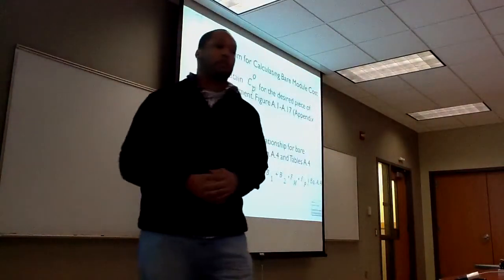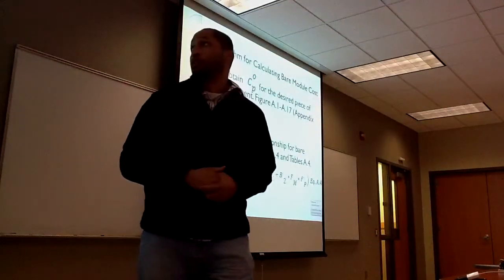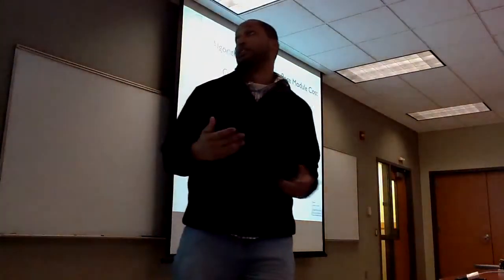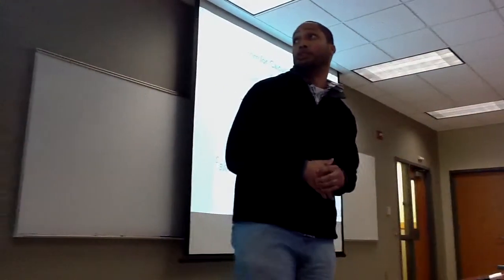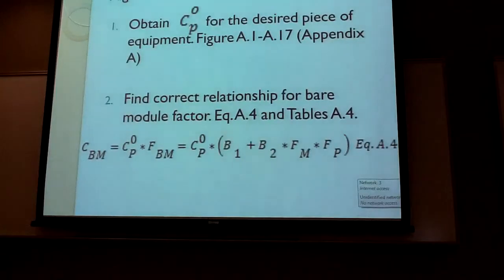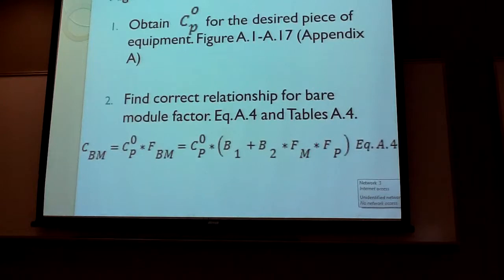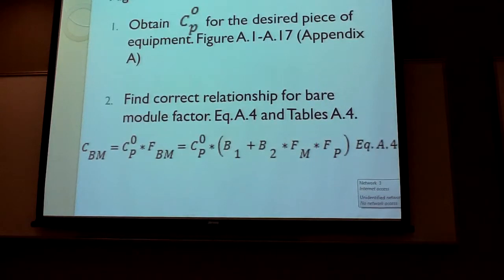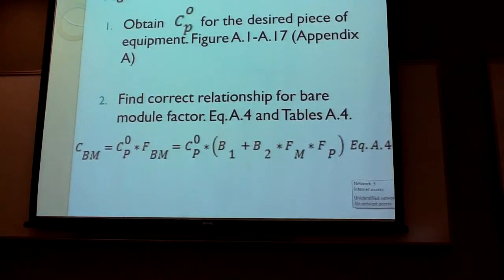The algorithm for calculating bare module cost is a six-step algorithm. The first step would be to obtain a C sub P, which is your equipment cost for your desired piece of equipment. You can use figures 8.1 through 8.17 in Appendix 8 of your book to do this.